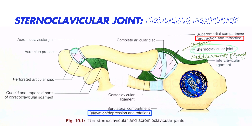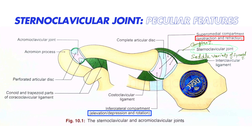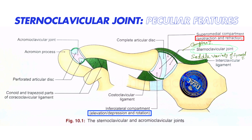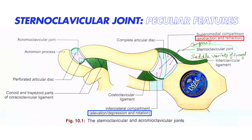Here you're seeing this compartment — this is the medial and superior, the supramedial compartment, towards the manubrium. In this compartment, the movement that is permissible is protraction and retraction. That means the clavicle can glide in a forward and backward direction in this supramedial compartment.